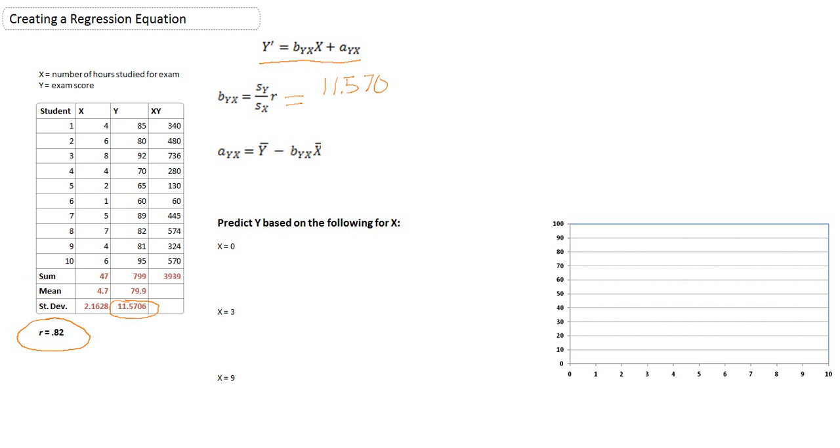11.5706 divided by the standard deviation of x, which if we look down in our table is 2.1628. I will list that in the denominator, 2.1628. And we will multiply that by Pearson's r, which I had circled, which I calculated earlier, is 0.82.